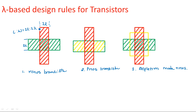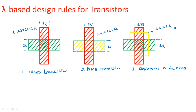For the transistors, the polysilicon is 2 lambda and P+ diffusion is also 2 lambda, so the length-to-width ratio is 2 lambda by 2 lambda. Similarly, the other dimensions are 2 lambda each. The yellow region, which is 6 lambda by 6 lambda, represents the ion implant. Ion implantation means the channel is already created in depletion mode. These are the design rules for each and every layer generally used in MOSFET realizations, and such rules are known as lambda-based design rules.